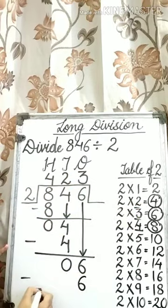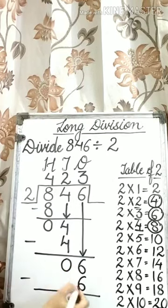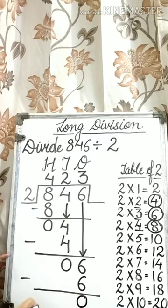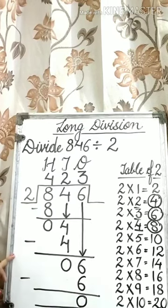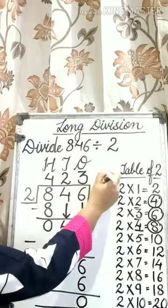Again, we need to subtract now. 6 minus 6 is equal to 0. Here the quotient is 423.